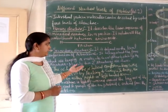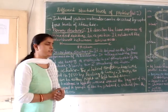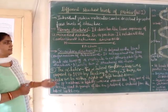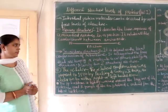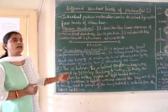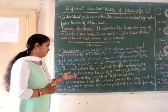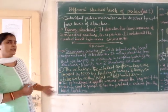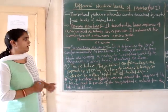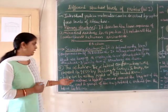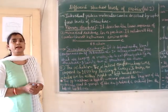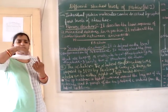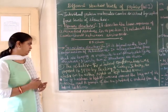There are two types of secondary structures. The first is the alpha helical structure, which was proposed in 1950 by Pauling and Corey. The alpha helix can be either right-handed or left-handed.